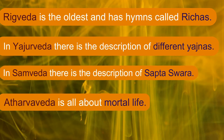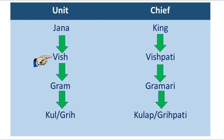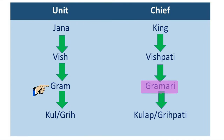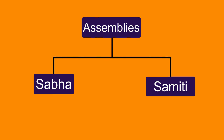In the Rig Vedic period, social classes were divided in a particular way. Let's have a look at the table. Aryans lived in tribes called Jan, and the chief of the Jan was known as the king. One Jan had many Vish; the head of Vish is known as Vishpati. Many villages combined to make a Gram, whose chief is known as Gramani. Gram was divided into Kul or Grihi, and the chief was called Kulapa or Grihipati.